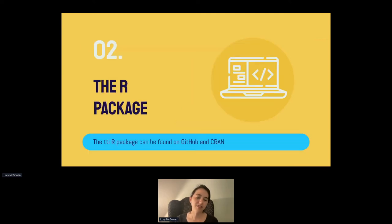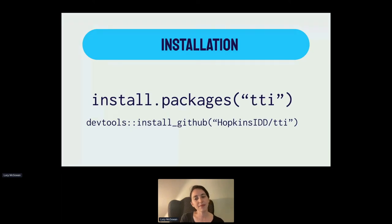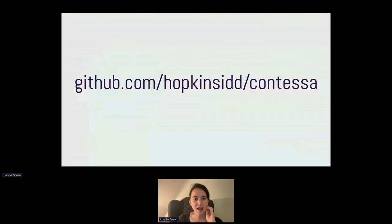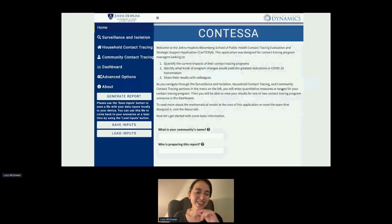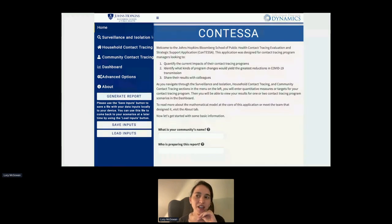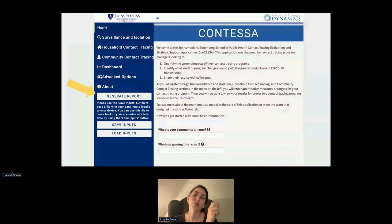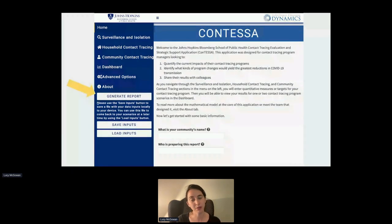The application we're building allows public health departments to tweak these different parameters in a practical way — for example, if they think they could ramp up testing to detect 50% of cases, they can see how that would impact onward transmission. We have an R package on GitHub and CRAN called TTI that implements this model. We also have a Shiny application — you can find the code at github.com/HopkinsIDD/contessa. I'll show the link so you can demo the application yourself.